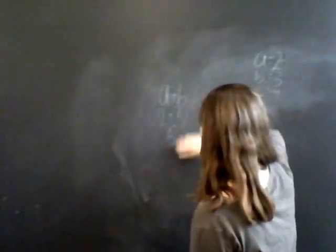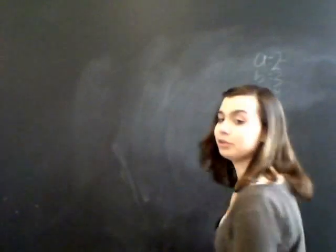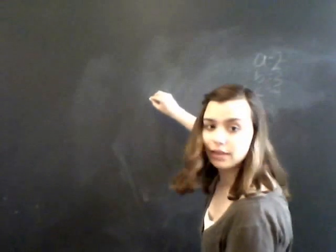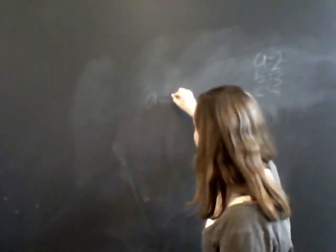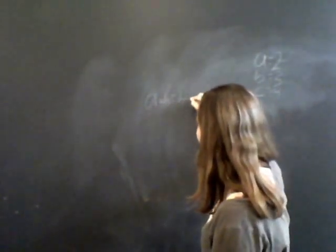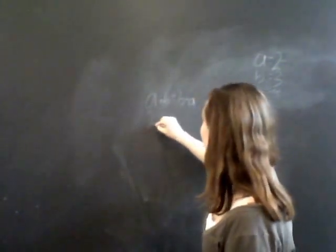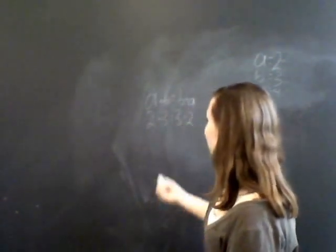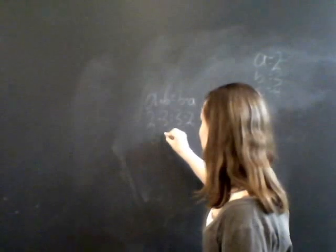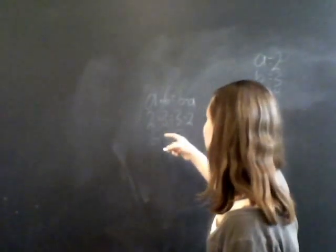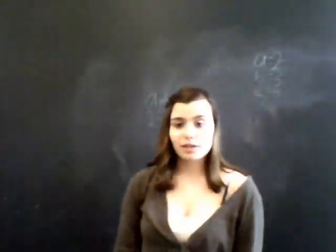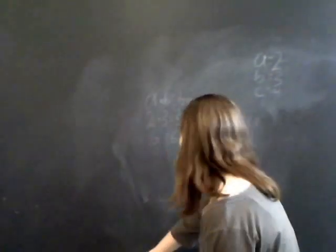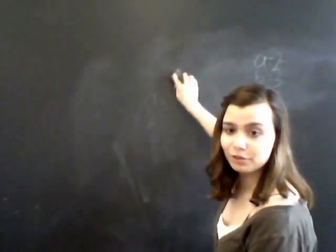The next property we're going to discuss is the commutative property of multiplication. This is another one that you probably know already. It states that a times b is equal to b times a. Plugging in our variables, 2 times 3 equals 3 times 2. This one also is obviously going to come out to be the same answer — 6 equals 6. 2 times 3 is 6, 3 times 2 is 6. This one also makes sense because if you have three groups of 2, it's the same as having two groups of 3. That was the commutative property of multiplication.